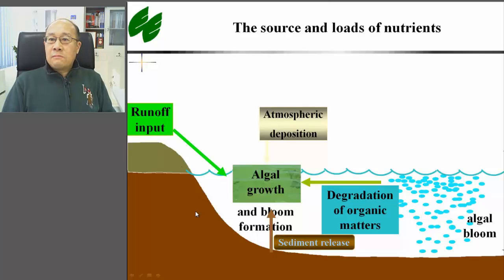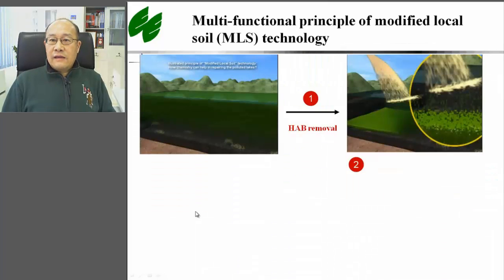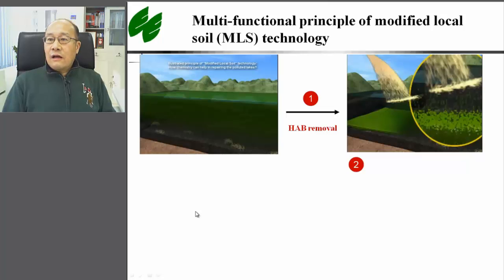Algae can absorb large amounts of dissolved nutrients during a bloom even at low nutrient levels. If we can remove the algae cells from the water and sink them down to the sediment without letting them be reused for algae growth, then we may not only solve the problem of toxic algal blooms, but also make use of valuable nutrients as a resource for the restoration of ecological systems such as submerged vegetation. This idea has been studied in my group over the last 10 years, and the Modified Local Soil (MLS) technology has been developed. After local soil materials are modified by various non-chemical natural safe products, the MLS materials can be used in an ecologically safe way to achieve multiple functions.